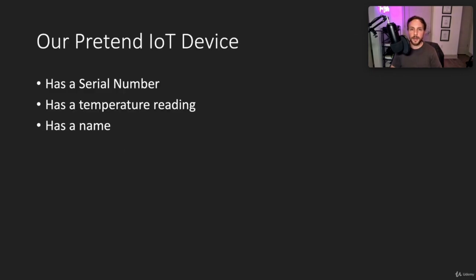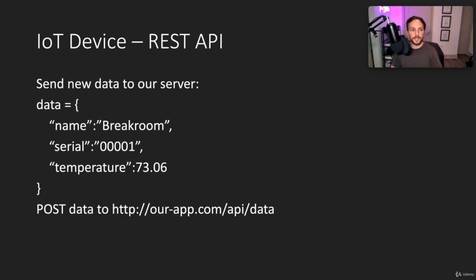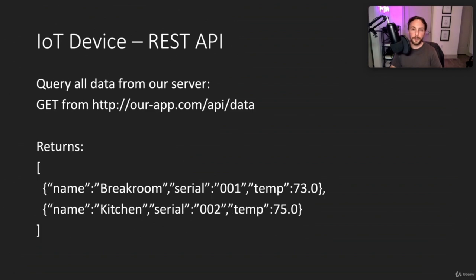Combining method, endpoint, and body gives you REST. Adding a user: POST JSON data to '/users'. Getting users: GET '/api/users'. Getting a user by ID: GET '/api/users/:id'. Our IoT device data will have a serial number, a temperature reading, and a name. We'll POST that to '/api/data' to store it, and GET '/api/data' to retrieve an array of JSON objects. Let's jump into the code.